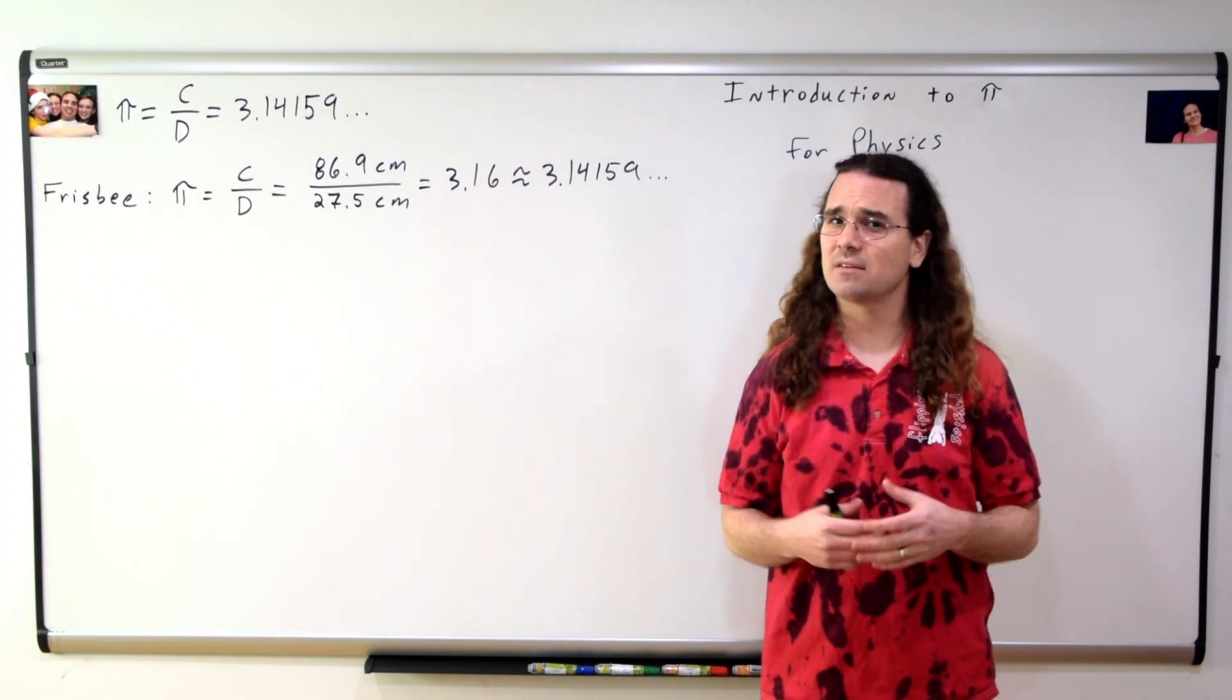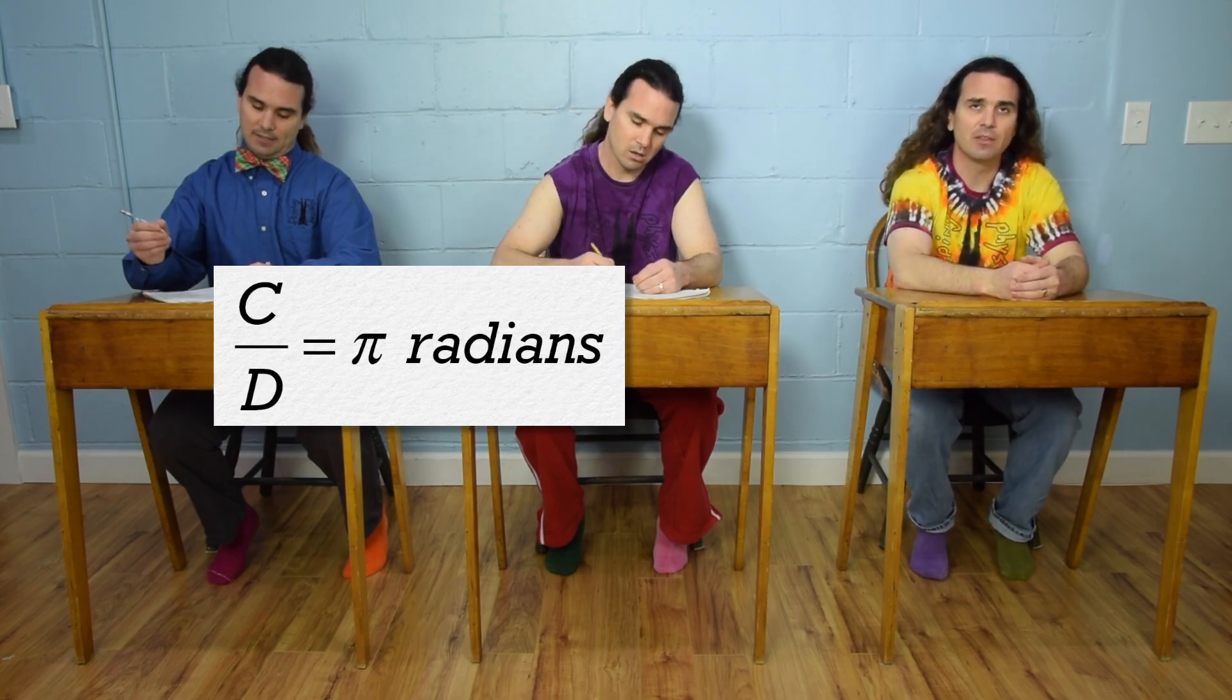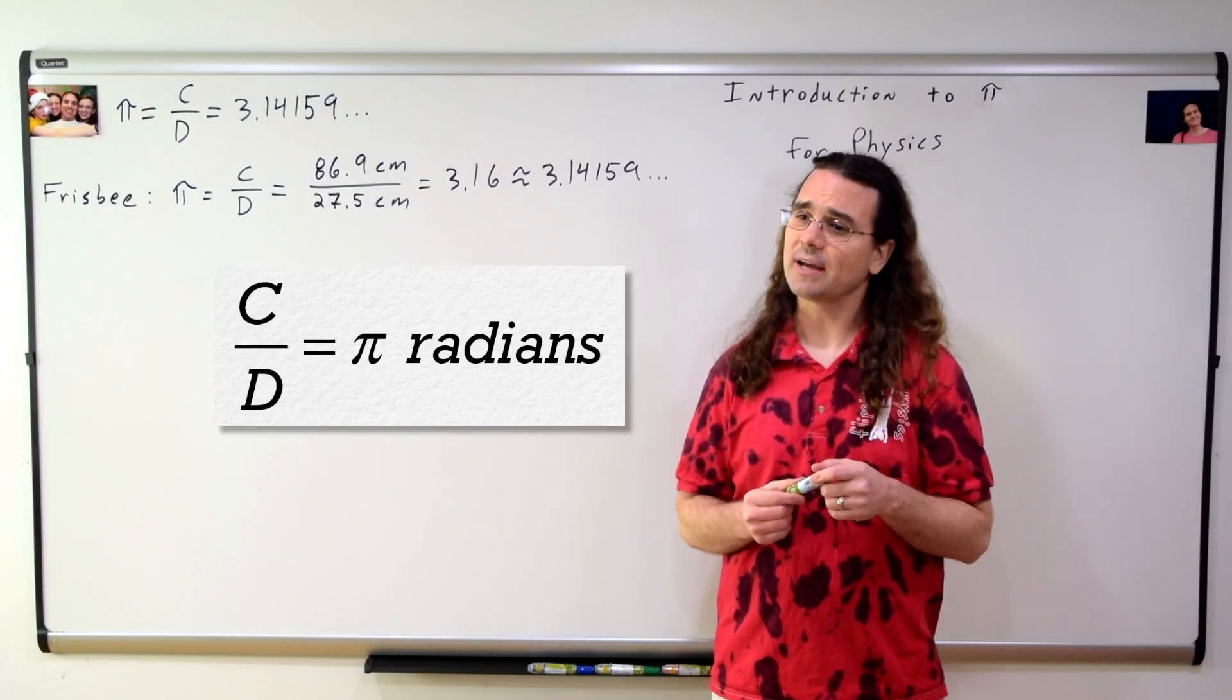the centimeters cancel out and we get no units at all. Mr. P, radians. This is where radians come from. The circumference divided by the diameter equals pi radians. Bo, you are correct.